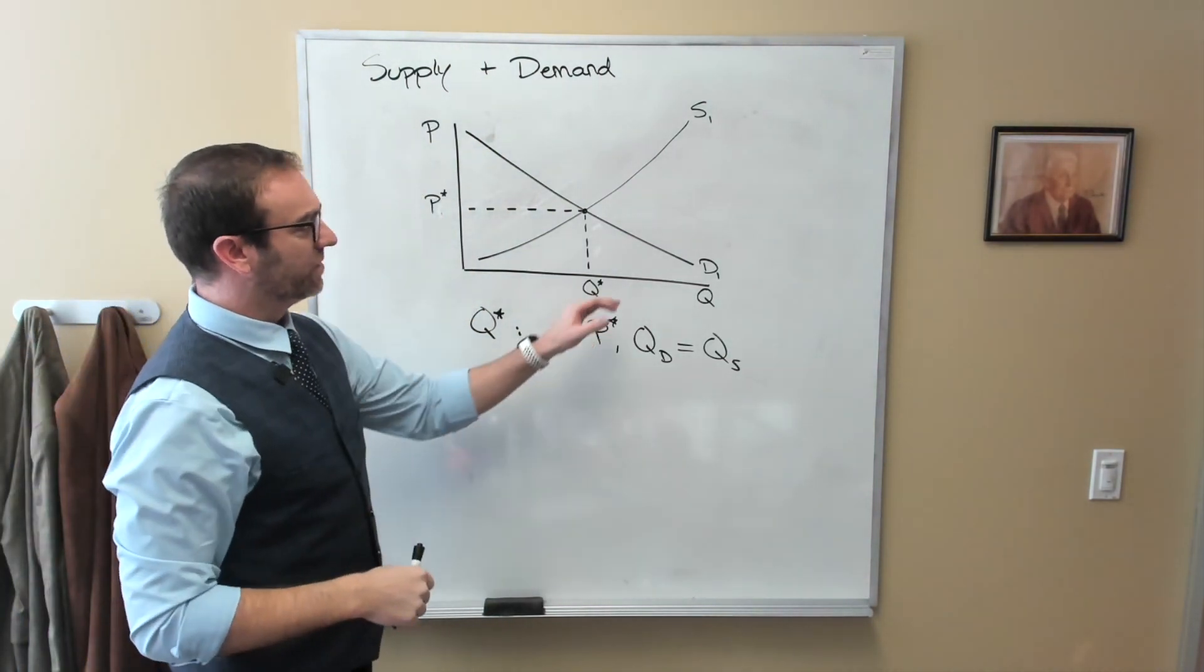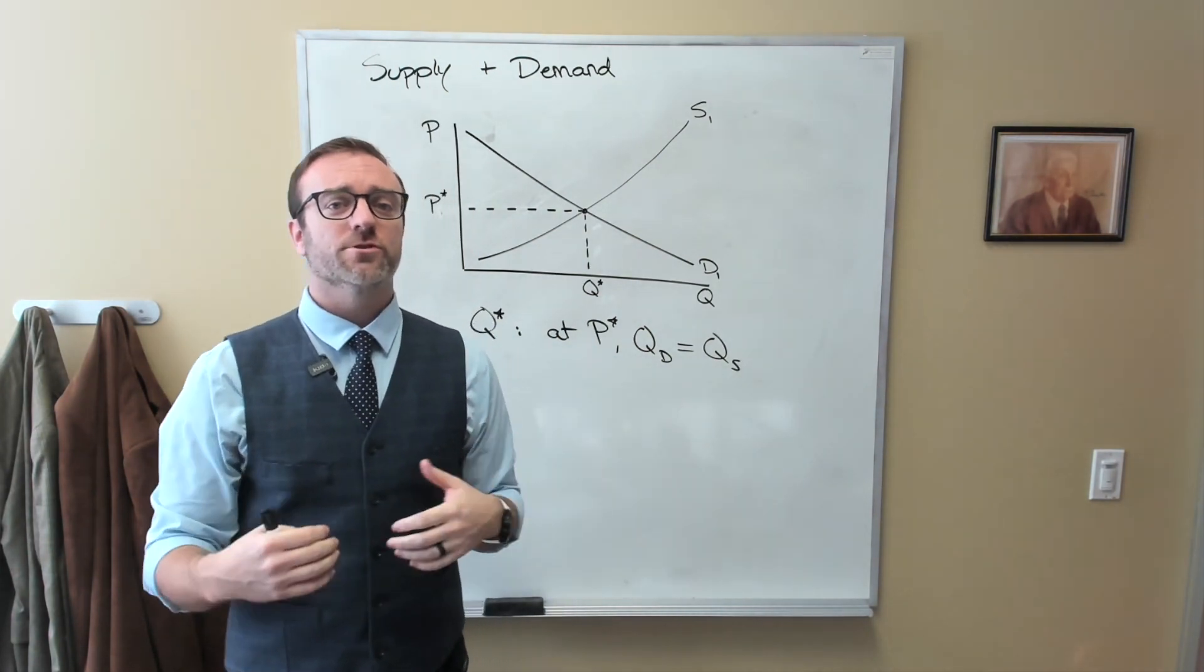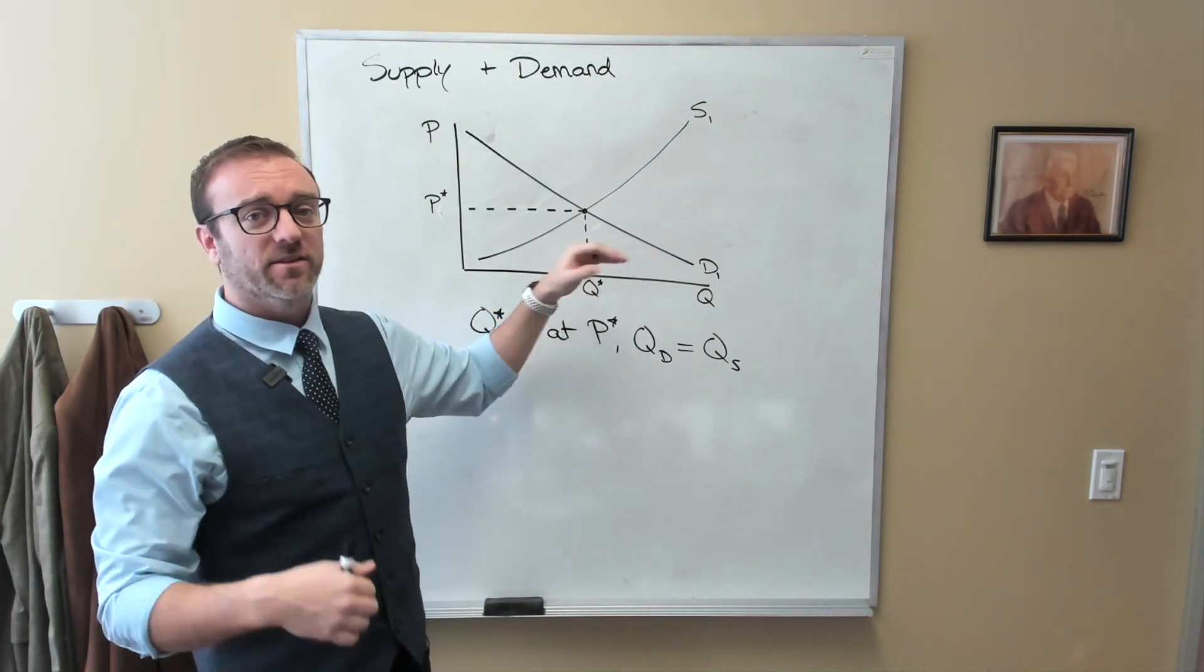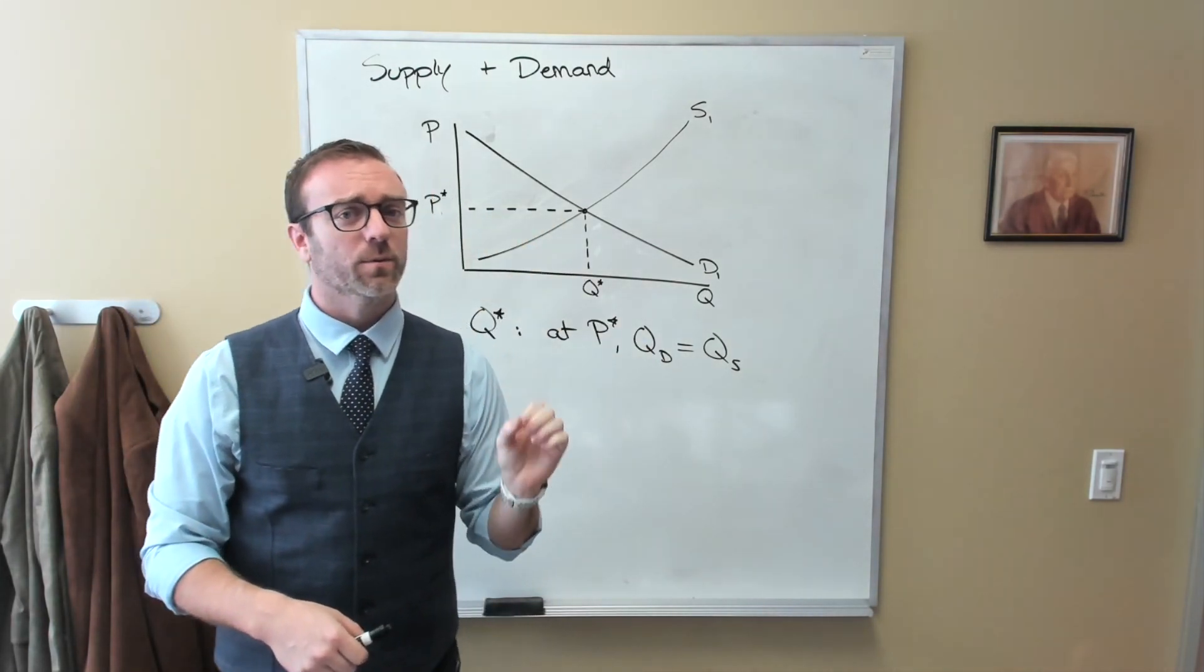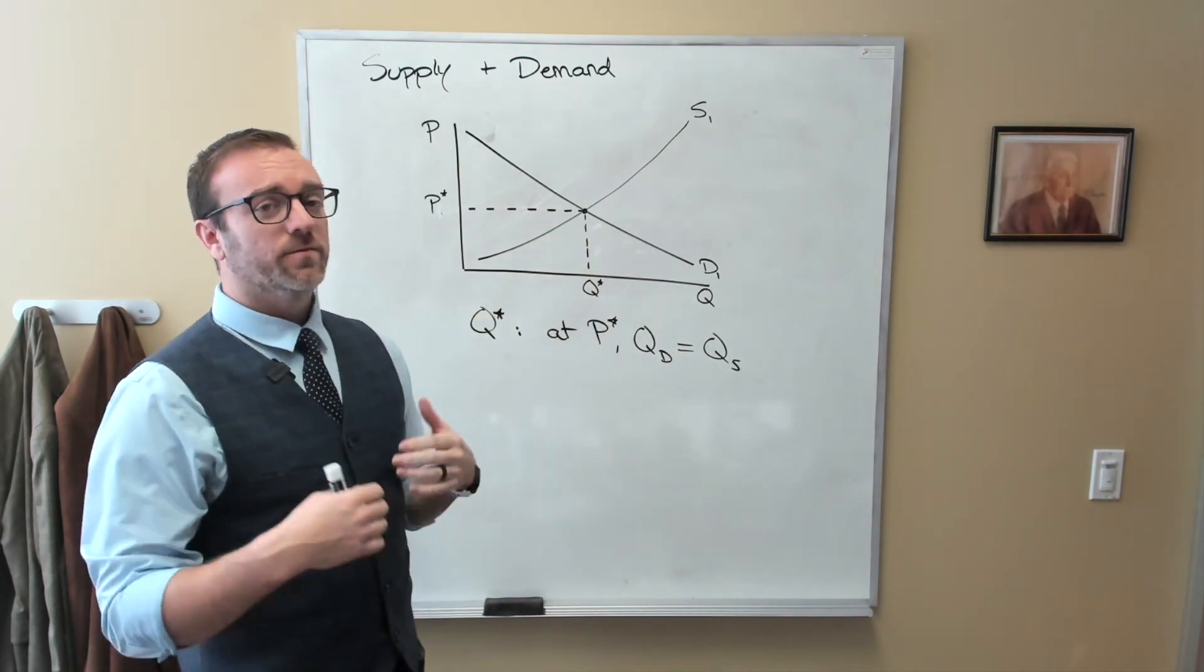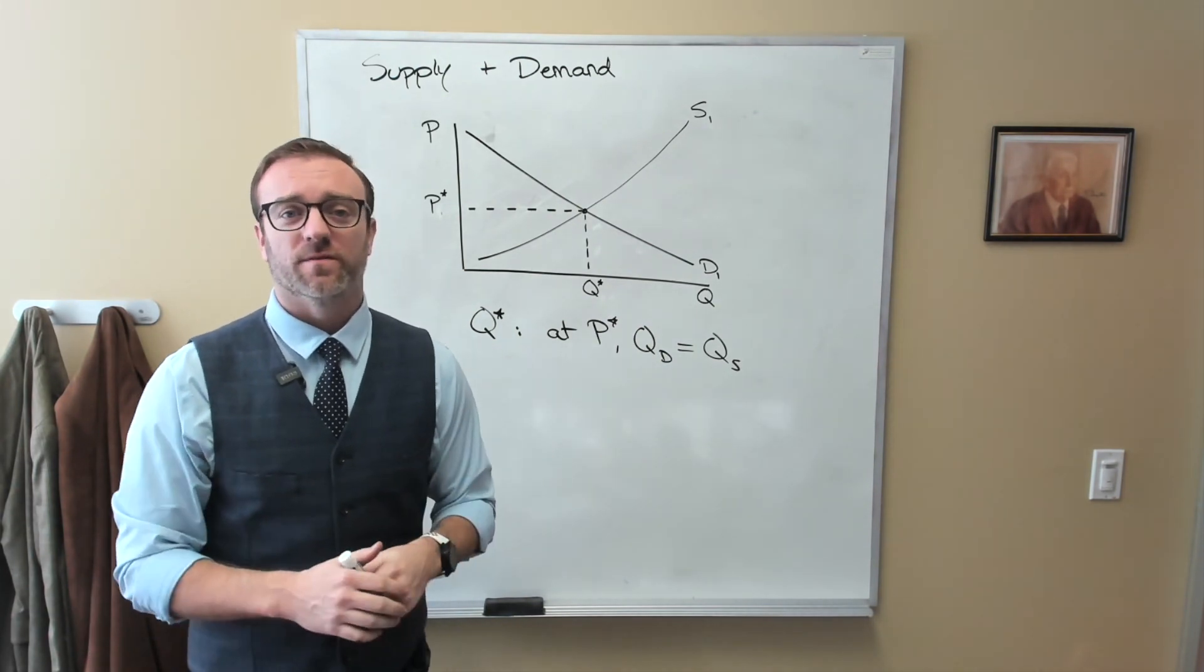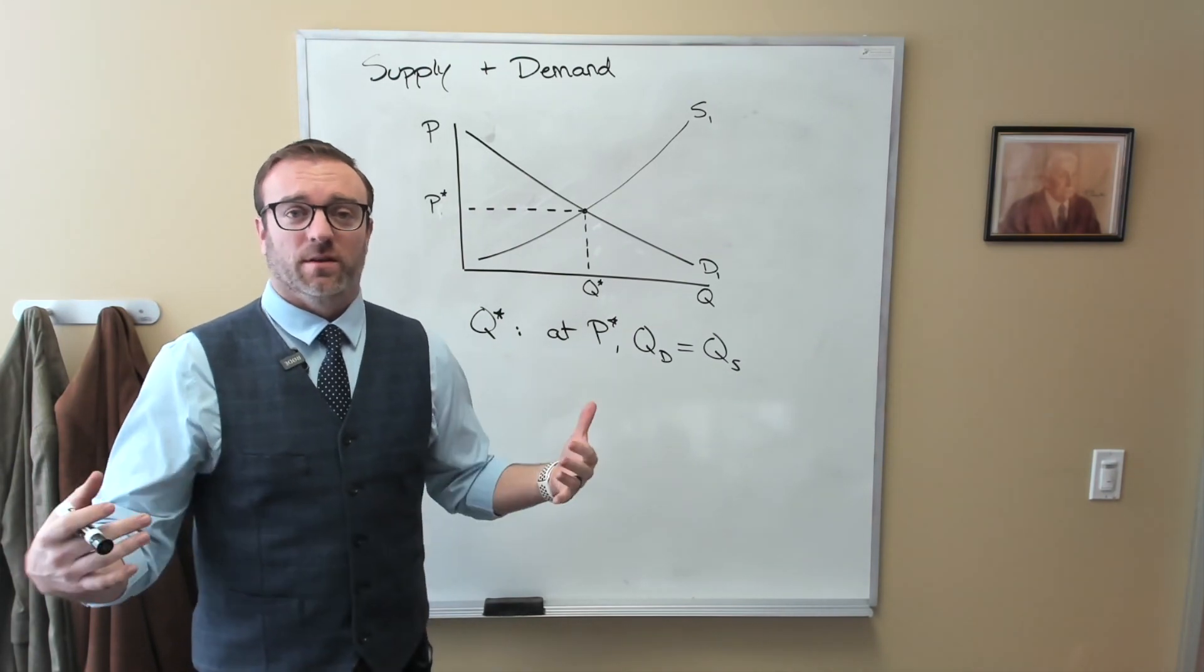We should never forget that the demand curve represents people. It represents people who wish to purchase or acquire health care. After all, these are people that we care about as people. But we should also remember that the supply curve represents people too. These are people who have to provide the health care, and they have other things that they wish to do too, including for example, being with family, being with friends, and everything else that goes with living life.